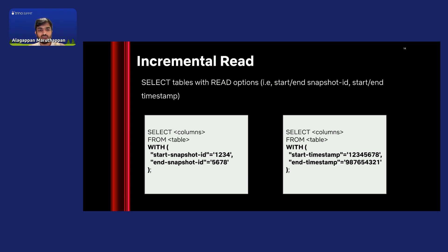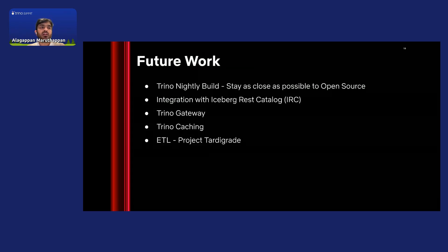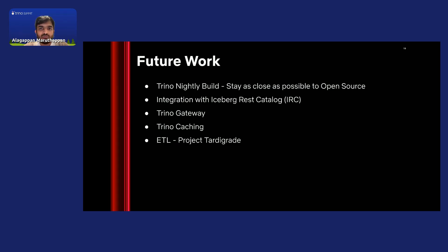These are some of the internal features that we have built, and we would like to contribute as much as possible back to open source. Coming to the future work we are planning on the Trino side, we aim to stay as close as possible to open-source Trino. We are working on integrating open-source changes within our internal Trino fork as soon as they are released, and we are trying to build a nightly build setup to get fast access to all the changes being done in open source. Another major piece of work next year is Iceberg REST catalog integration — we have had issues with different engines using different versions of Iceberg clients.